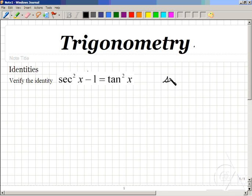So we recall that secant of x means 1 over cosine of x, and that tangent of x means sine of x over cosine of x.